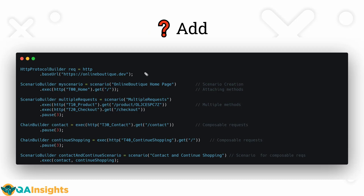Now let us see how you can add elements to the scenario. In this example, we have an HTTP protocol builder, which is simply the base URL configuration and other HTTP configuration. Here we are configuring the base URL as online-boutique.dev. Using the scenario builder, we create an object called my scenario, naming it 'online boutique homepage', and attaching the dot exec method, naming the HTTP request as T00 underscore home, and launching the homepage.